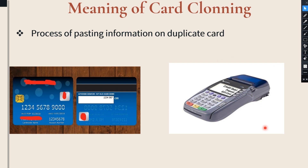Once the fraudsters prepare the duplicate card, they will insert the duplicate card in the ATM machine or in the point of sales terminal to perform duplicate transactions. However, these ATM machines and point of sales machines are not in a position to recognize the difference between the duplicate card and the original card.